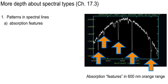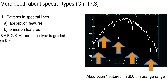These are absorption features. You can see emission features in some stars as well — where the curve would have a bump, an upward spike — but these are all downward spikes. These are absorption features. The spectral types that we have talked about: O, B, A, F, G, K, M. We're going to talk a little bit more about them.